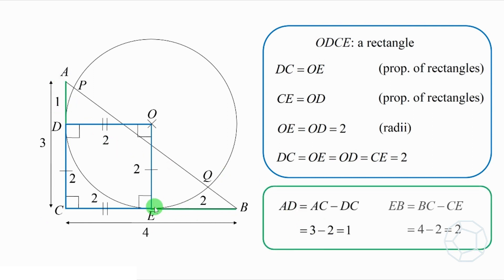and EB is equal to 4 minus 2, which is 2. We have nearly all information about the sides on AC and BC. What about the lengths along AB?